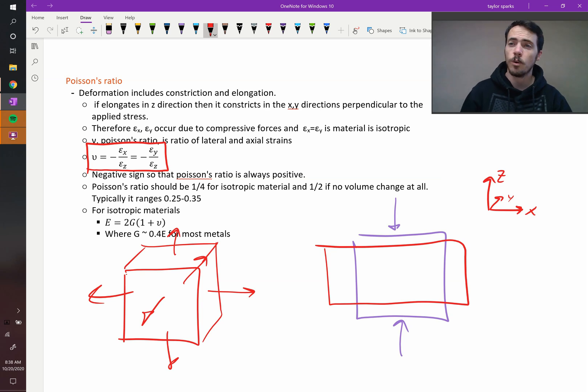There are some notable exceptions. If you take cork, for example, or probably styrofoam too, where there's lots of porosity and you compress it, it's not likely to bulge out very much because the material can just collapse in and fill those voids. And so it doesn't need to expand outwards to conserve volume.